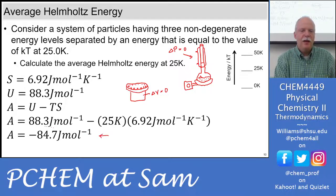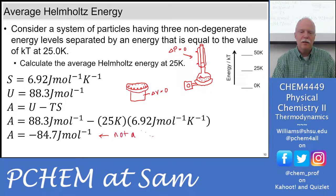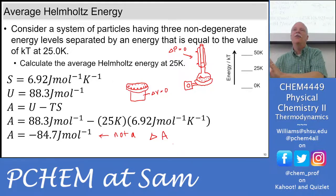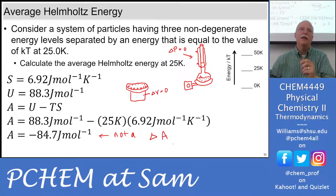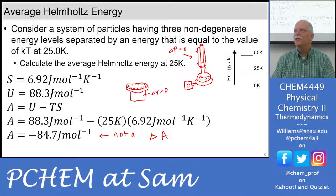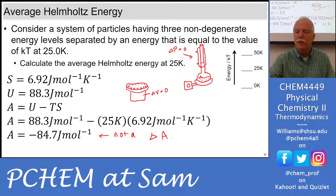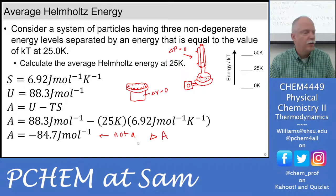We're calculating the Helmholtz energy for our system — this is not a delta. It's negative, but that doesn't mean anything is spontaneous because we won't have any chemical change in this system alone. If we put this in contact with another system that has degeneracy or something like that, then we have a delta A. It's the delta A that needs to be positive or negative, just like delta G. So we're just calculating A for our system.